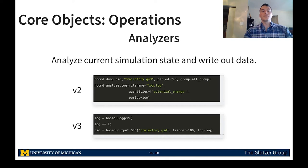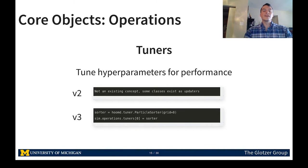Analyzers write data for later analysis. In version 2 we have separate GSD and log objects, while in version 3 a logger object can be plugged into the GSD object to create the same output. Finally, tuners tune hyperparameters for performance — a new concept in version 3. An example is the particle sorter, which sorts particles according to a Hilbert curve to dramatically improve caching.